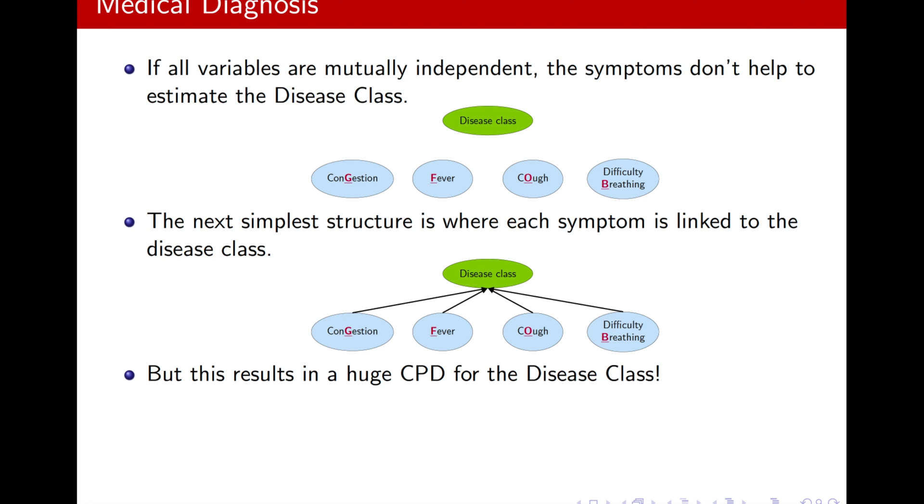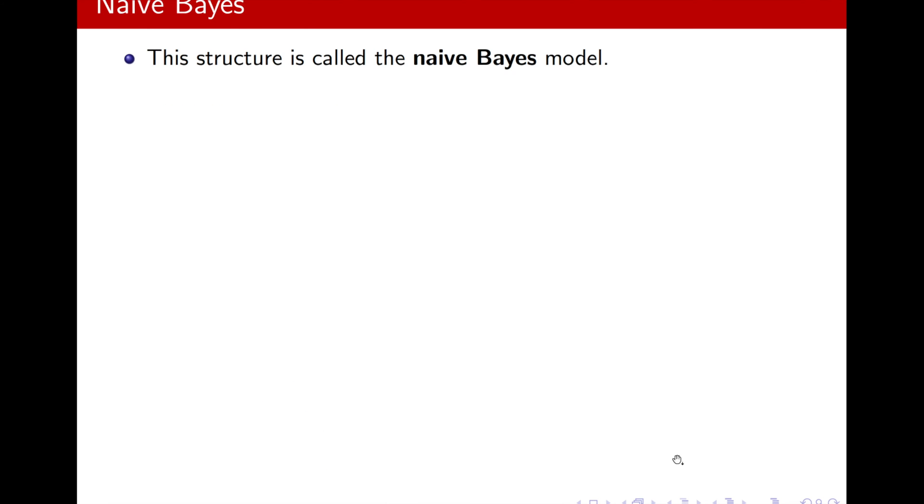What's the solution, then? Well, what if I just reverse the directions? Now, in this case, the disease class will only have two, because it has just three variables, values. And I can, I will show in the next slide how we can calculate these other ones. This structure will have fewer parameters, and it's called the Naive Bayes model.